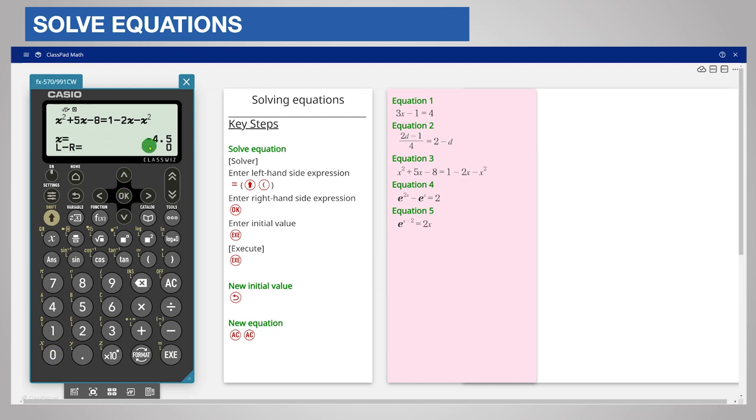If the calculator had found the same solution x is equal to 1, try a new initial value further from 1 in the positive direction, for example positive 10.